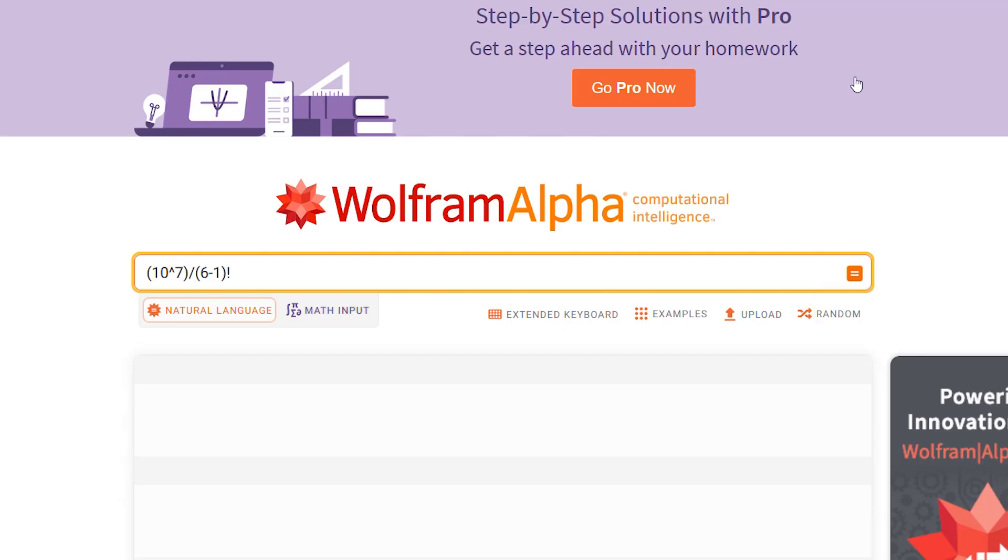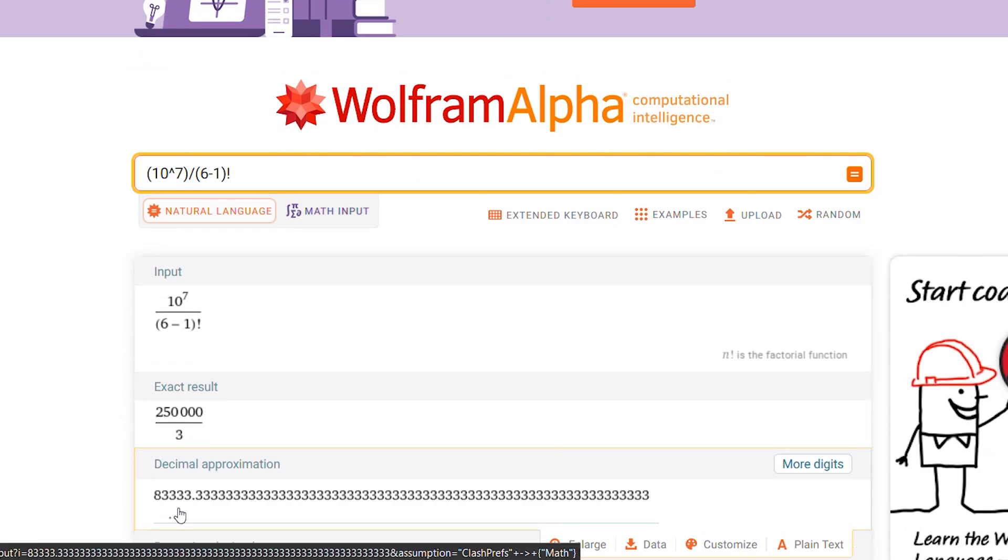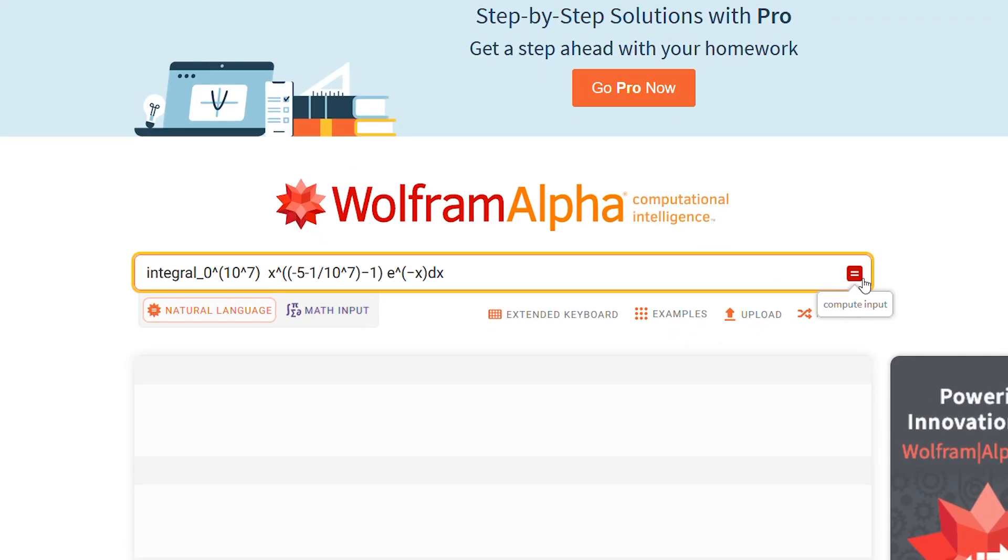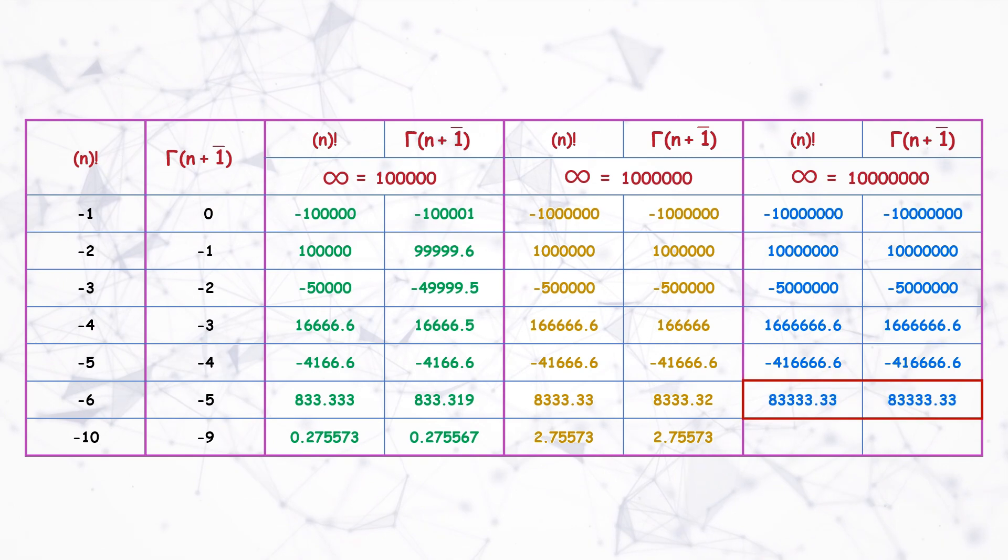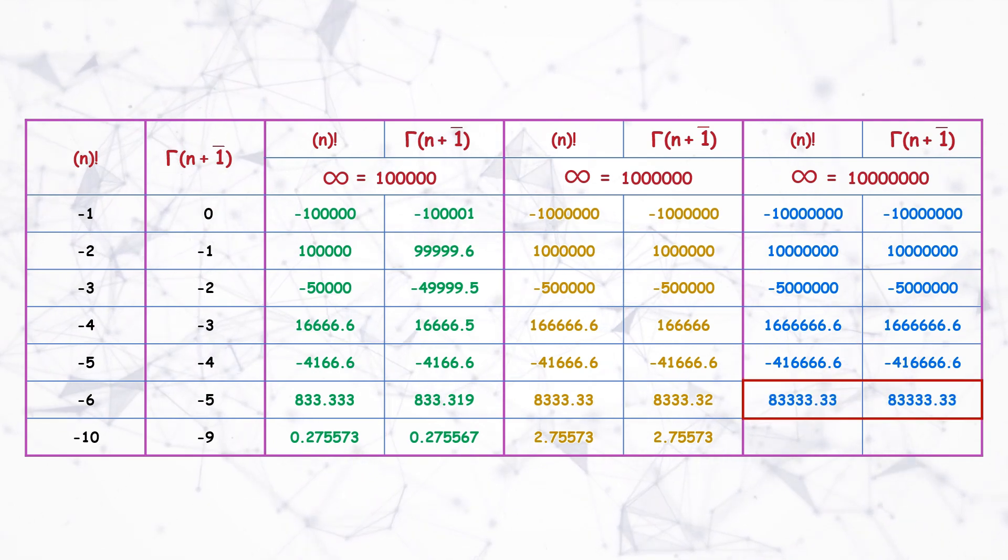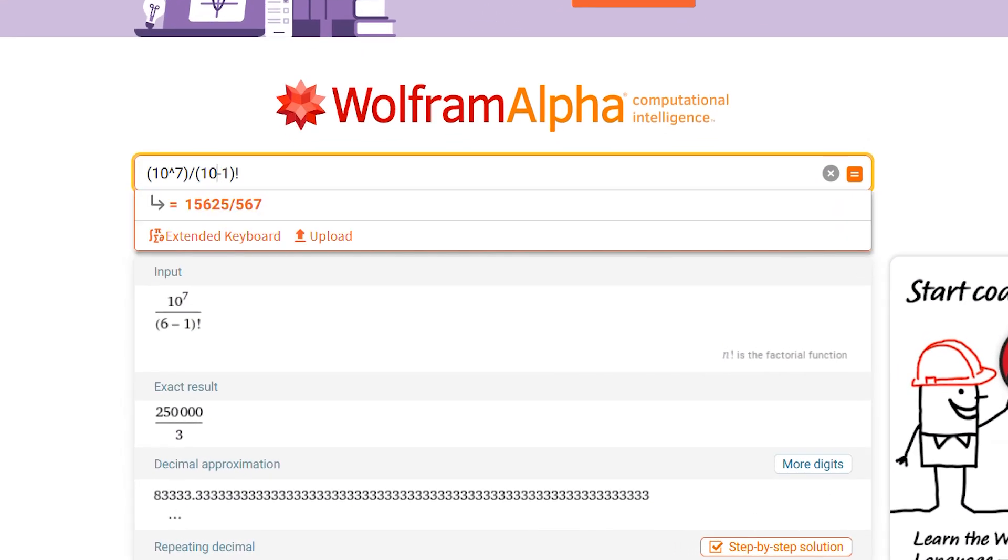For minus 6 factorial, it is 8333.6 and gamma function is also the same. For minus 10 factorial, both yield the same solution.